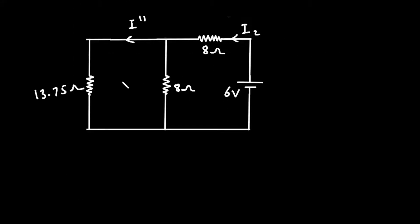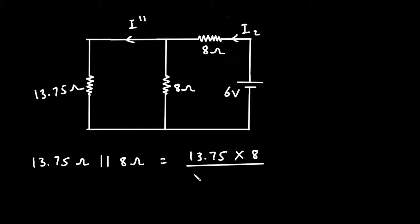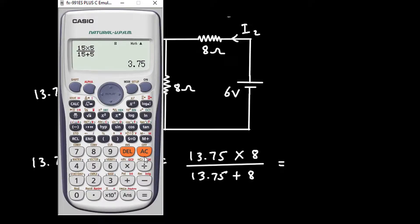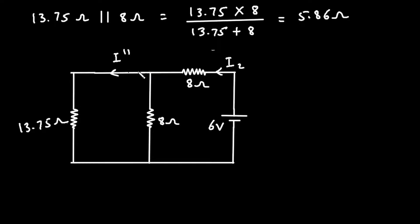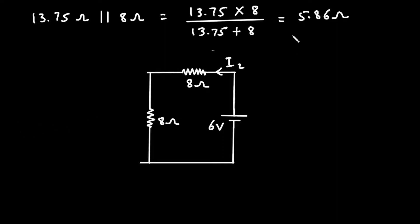The 13.75Ω and 8Ω are connected in parallel. 13.75 parallel with 8 equals 13.75 × 8 divided by 13.75 + 8, which equals 5.86Ω. We replace these two resistances with a single resistance of 5.86Ω.